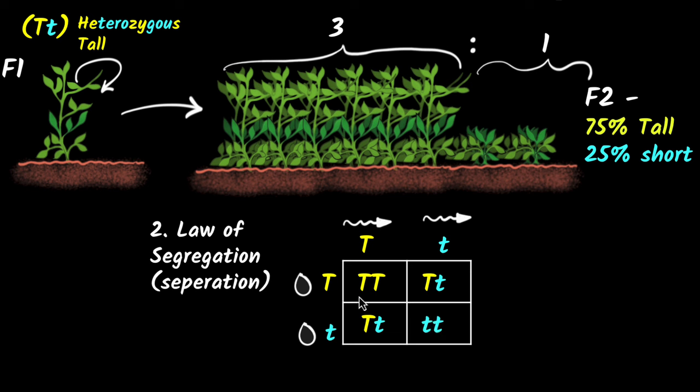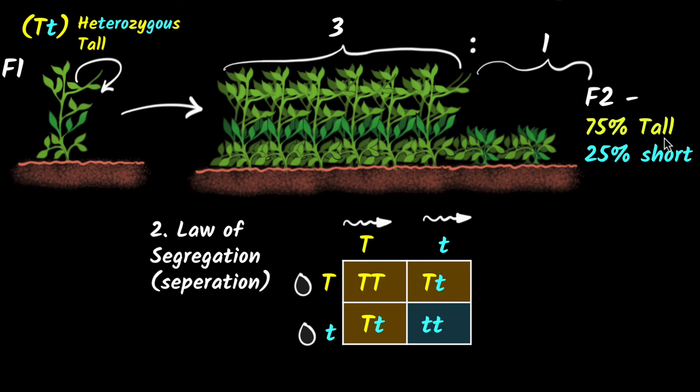And now look, this will be tall, this will be tall, and this will be tall. And so we get three out of four, which is 75% tall, and we get one out of four, which is 25% short. And the reason for that is again, the law of dominance.